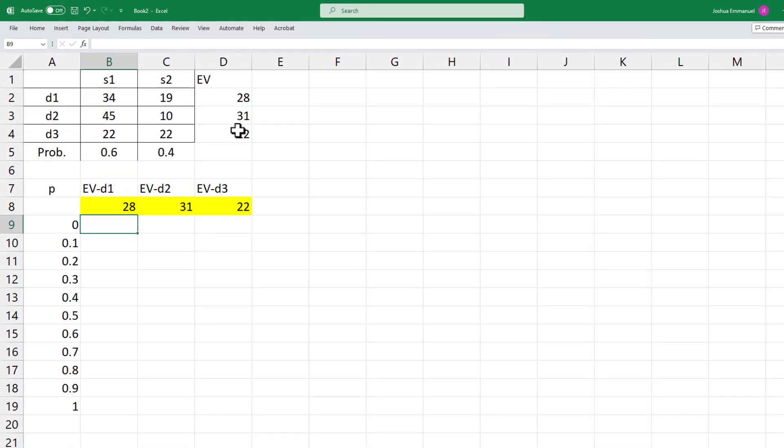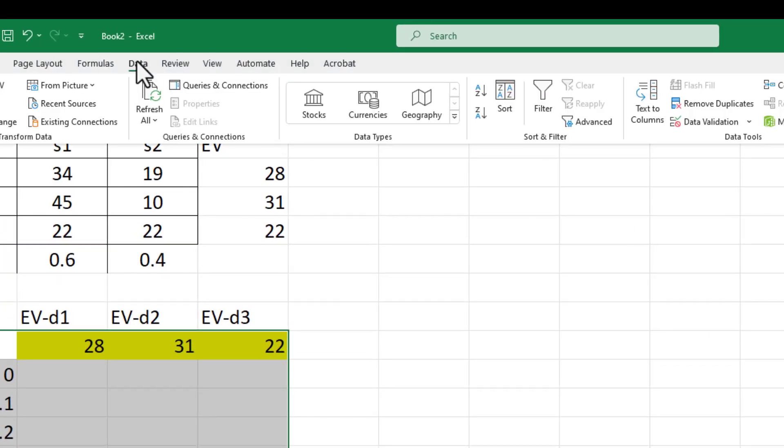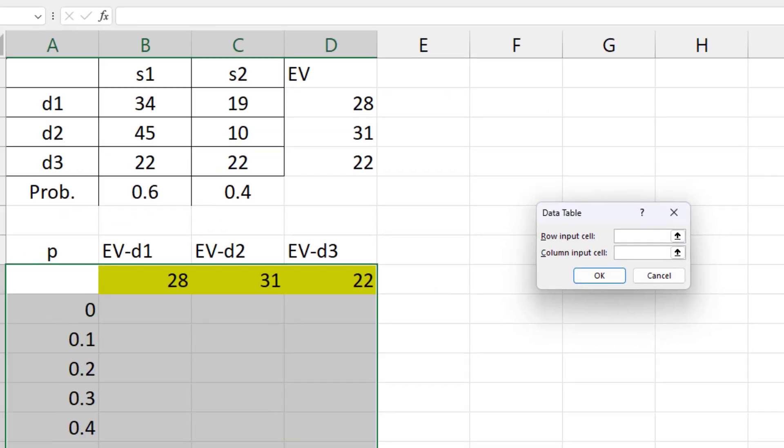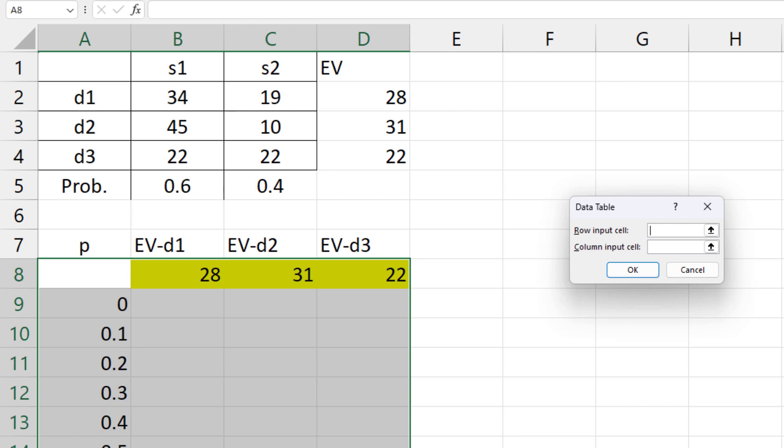Next, to use the data table, I'm going to select the probabilities and the expected values. Click the data tab, then what if analysis. Then click data table. Now the expected values depend on the probabilities. So we need to select the probability cell. Since the probabilities are arranged in a column, we will enter the value of P into the column input cell. And click OK.